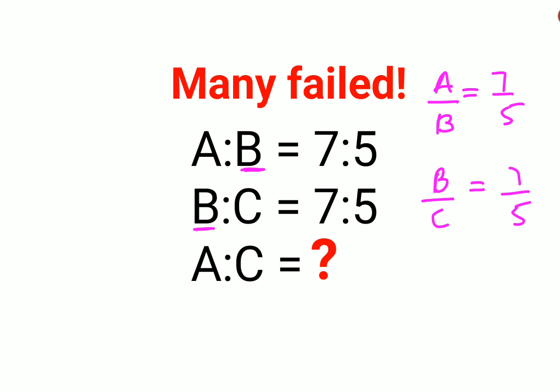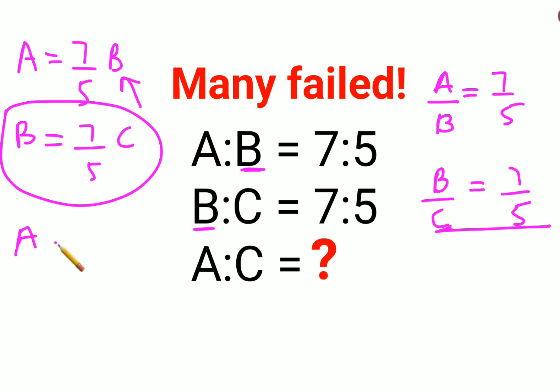From here what you can do is I can say A equals to 7 upon 5 B. And from this particular equation I can say B equals to 7 upon 5 C. So now let's put this value of B in this question. So we have A equals to 7 upon 5. Instead of B, I will put this value which is 7 upon 5 C. So value of A equals to 49 upon 25 C.